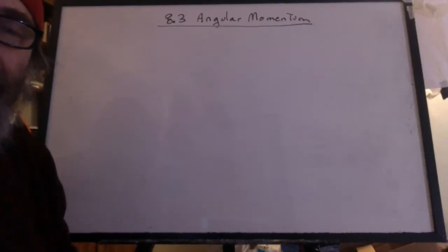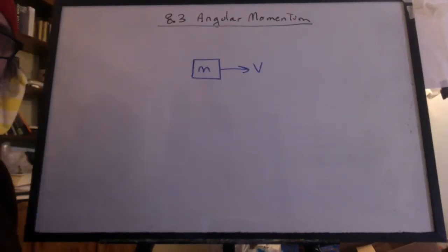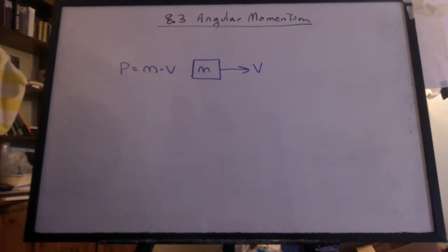Let's go over angular momentum. We start with a mass moving to velocity v. It has a momentum of mass times velocity.